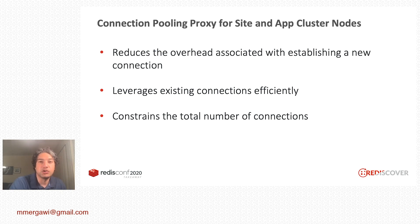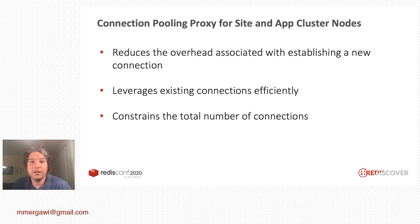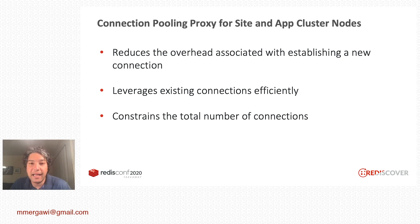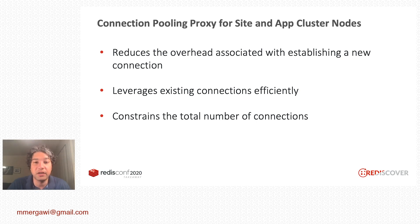The first layer is the connection pooling proxy. Why did we need to build a new proxy rather than just leverage TwinProxy? In the new architecture, the apps or clients no longer have a direct connection with Redis — they go through a microservice in the middle that handles this. We still deployed a proxy on every box of the clients. The role of the proxy was to constrain the total number of connections and reduce the overhead of creating a new connection every time between the service and the clients.